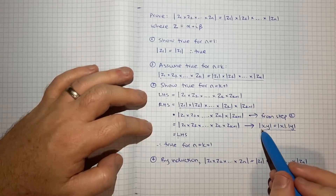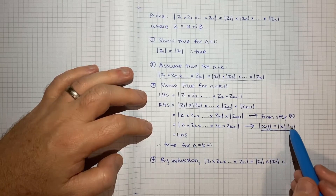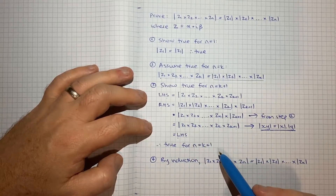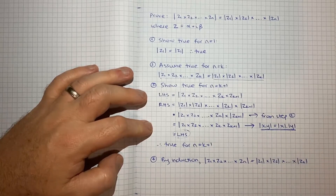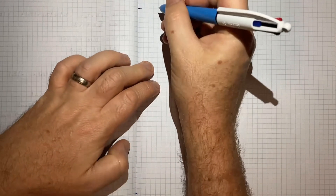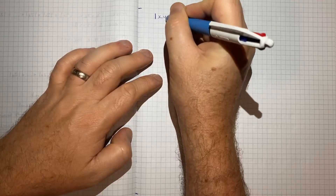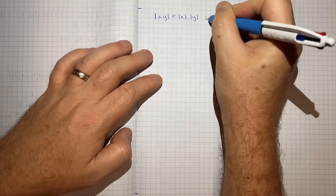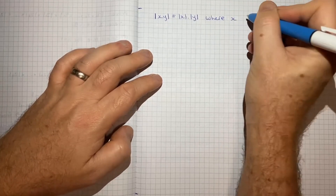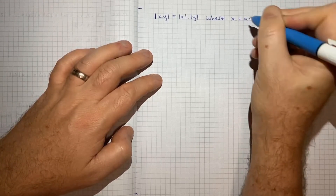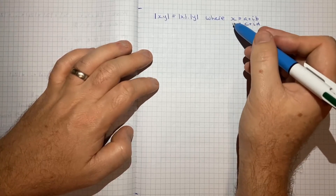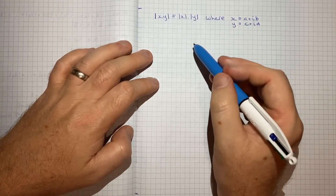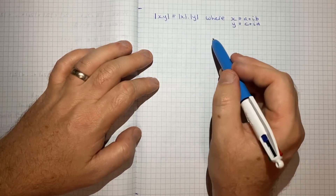That's the proof by induction, but as mentioned I want to separately show the result that the modulus of x times y equals the modulus of x times the modulus of y, because we relied on it in the proof. It's an important result worth fleshing out. Before jumping into the expansion, it's helpful to show an intermediate result using the Argand diagram that will become useful.